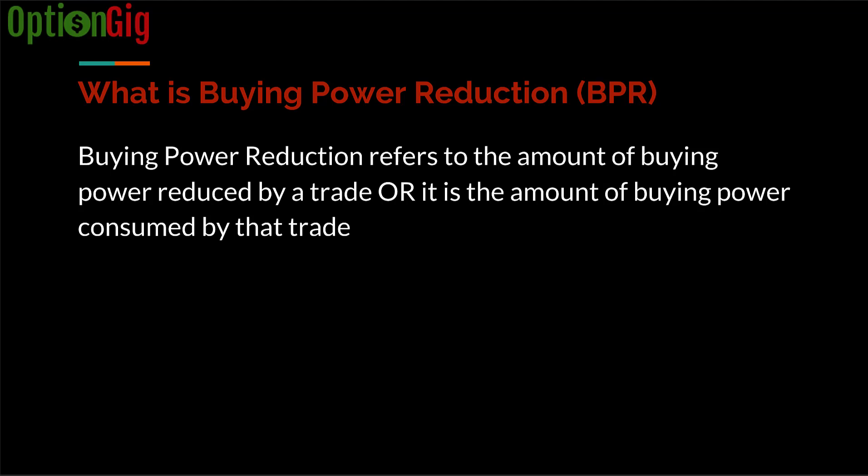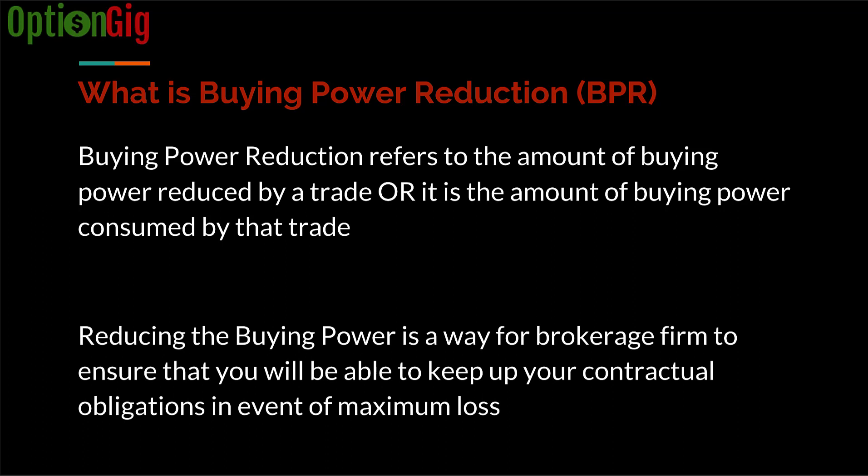Let's take an example. I had $50,000 in my portfolio and now I am buying a stock valued at $20, and I'm buying 100 shares, so the BPR or buying power reduction from that trade is 20 × 100 = $2,000. In trader lingo when we talk about BPR, we say: this option trade has a BPR of $2,000.